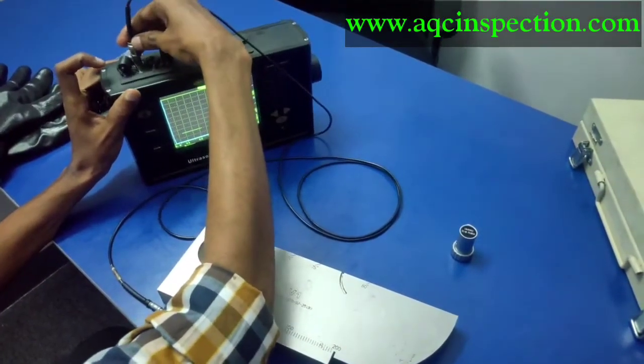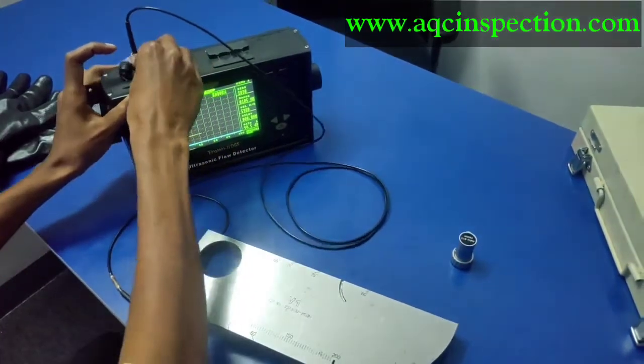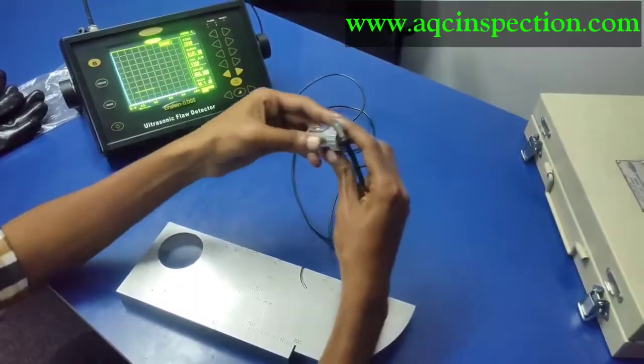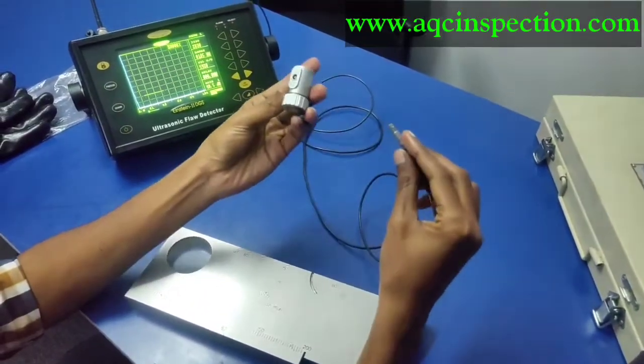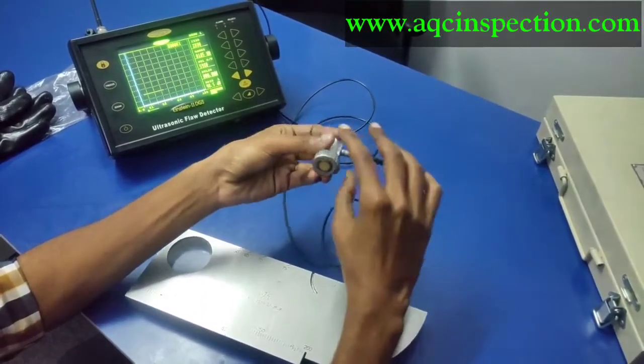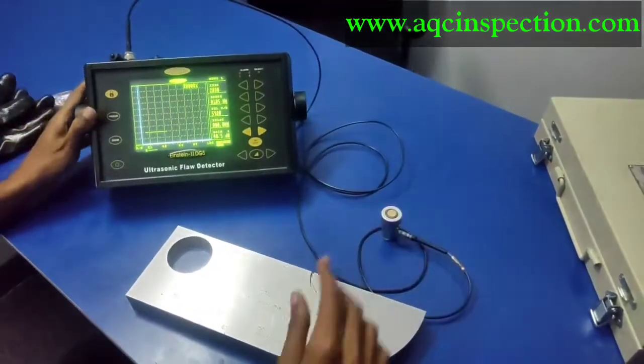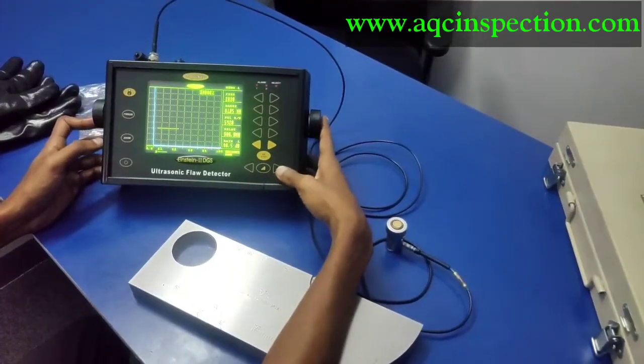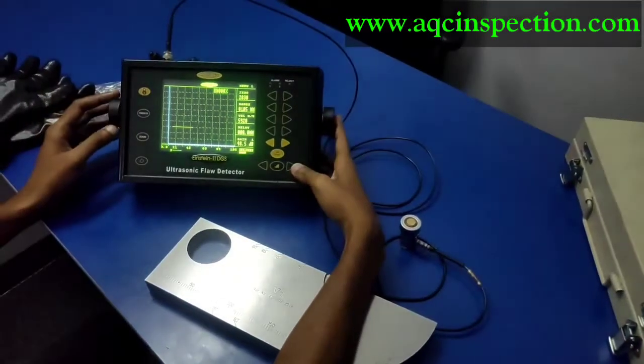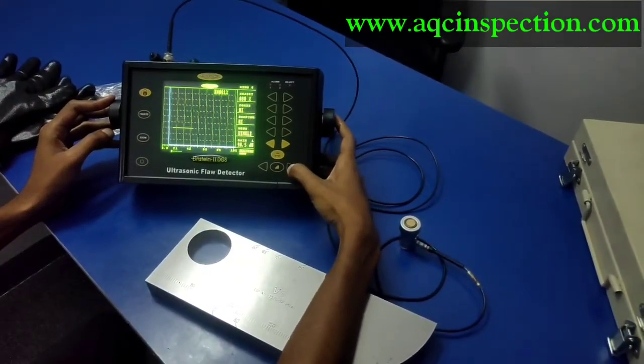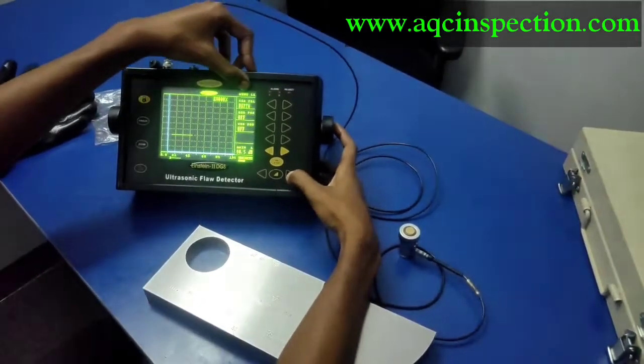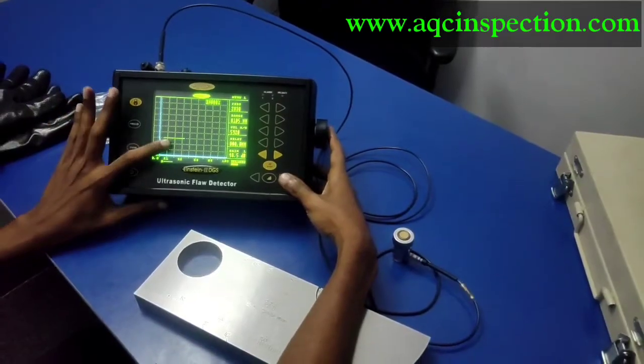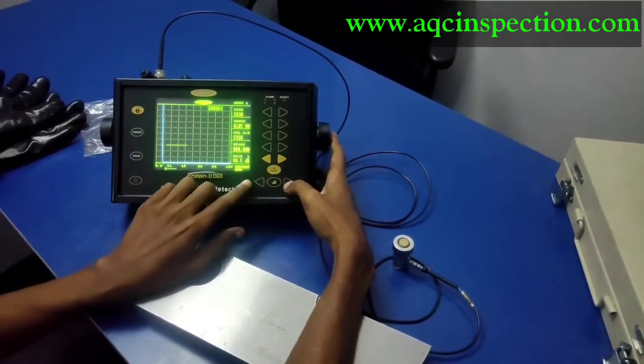First, we are going to connect this probe and then this cable with the probe right here. As you can see, this is the ultrasonic flaw detector, Einstein II DGS. We have 11 menus, a total of 11 menus. This right here, the green color line you see,